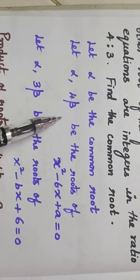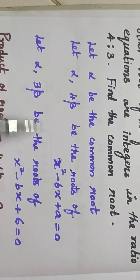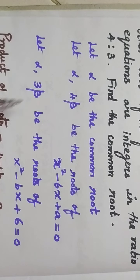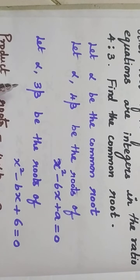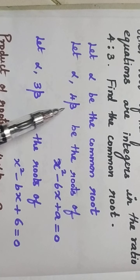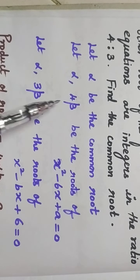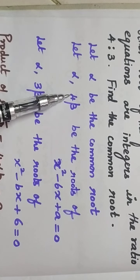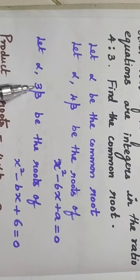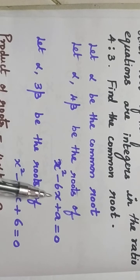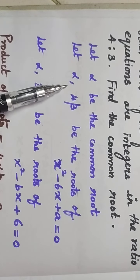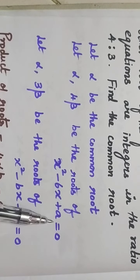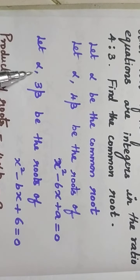Let alpha be the common root. So in the 2 equations, alpha is common. Beta is the other root, and that is in the 4 is to 3 ratio. So the other root is related to the summation. In the first equation, and the second equation, alpha and 3 beta are roots of the quadratic equation x squared minus bx plus 6 equals 0.